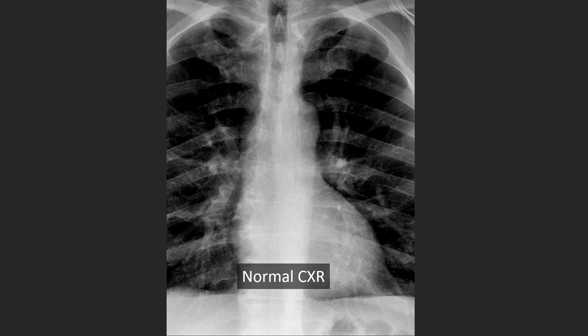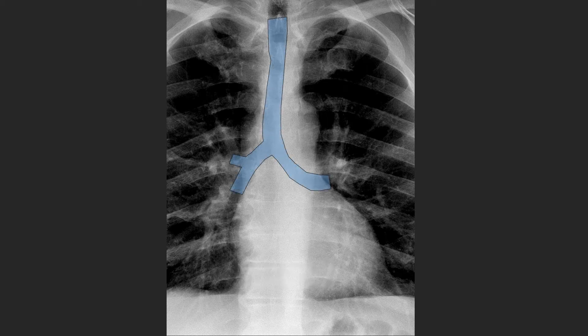Here's a normal frontal chest X-ray that we're going to use as our standard. The trachea extends from the thoracic inlet into the chest cavity and then divides at the level of the carina into the right main stem airway, which is very short and vertically oriented, and the left main stem airway, which is more horizontal and has a longer course.